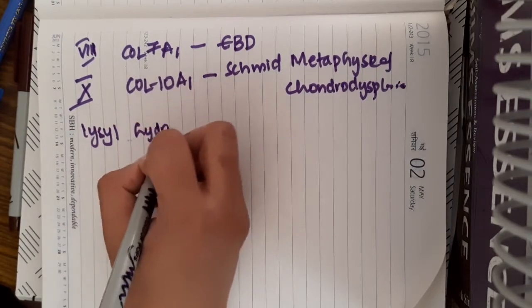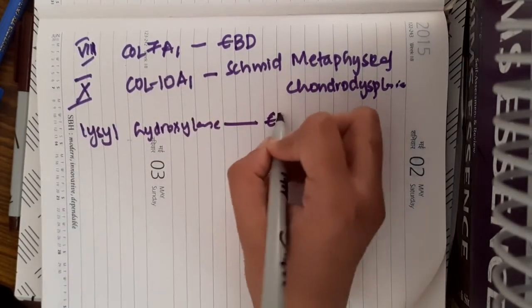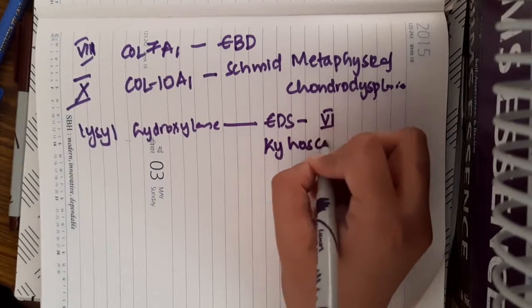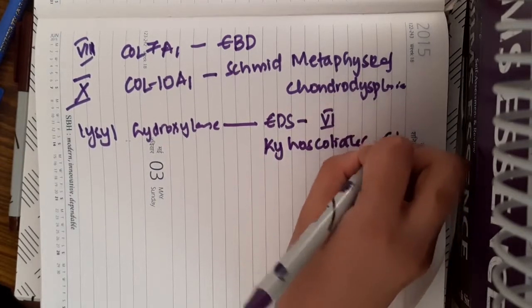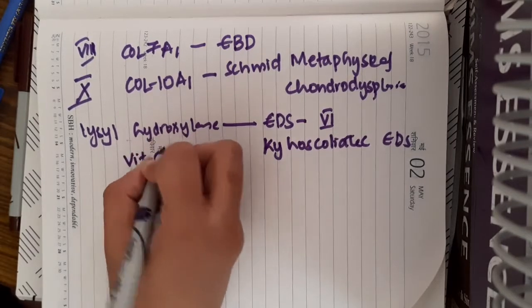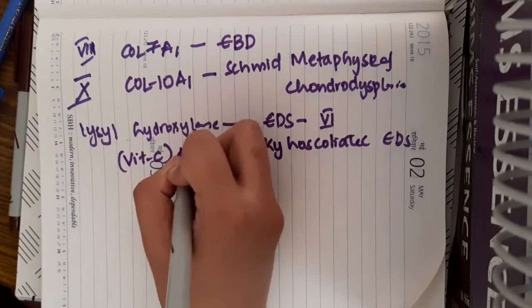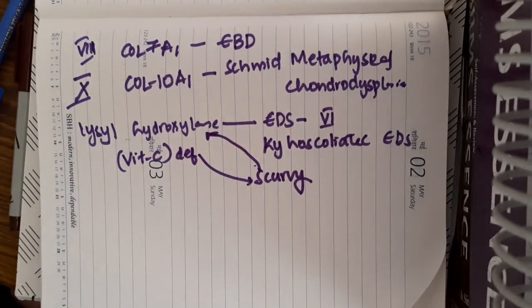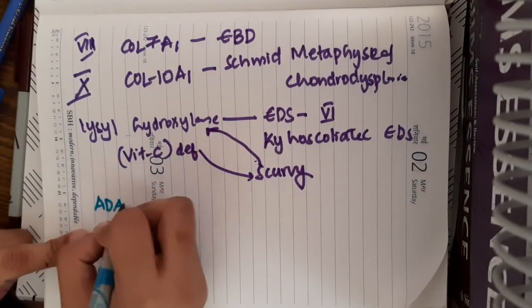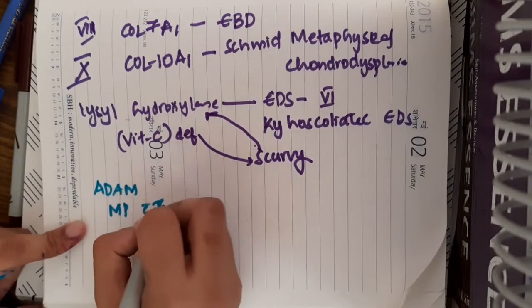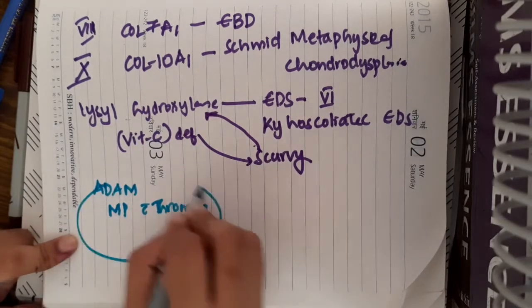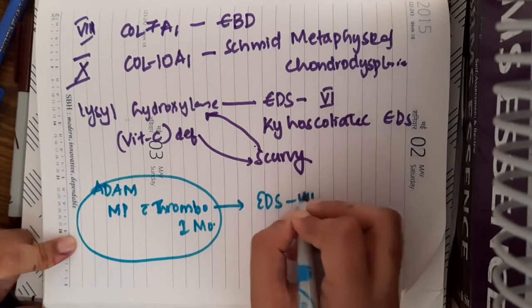Defect or mutation in lysyl hydroxylase enzyme results in Ehler-Danlos syndrome type 6 or kyphoscoliotic Ehler-Danlos syndrome. This lysyl hydroxylase requires vitamin C. If vitamin C deficiency, it results in scurvy, and it also causes lysyl hydroxylase deficiency. Then, we have something called as ADAM metallopeptidase with thrombospondin type 1 motif. If there is defect in this, this will result in Ehler-Danlos syndrome type 7.